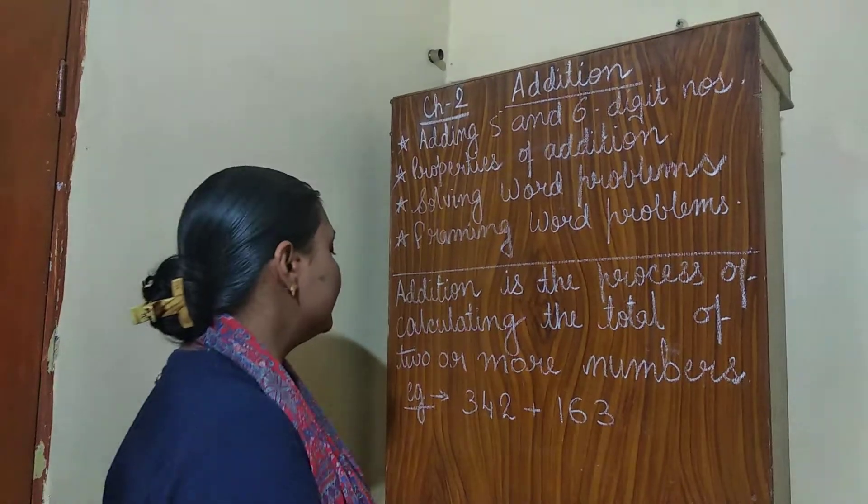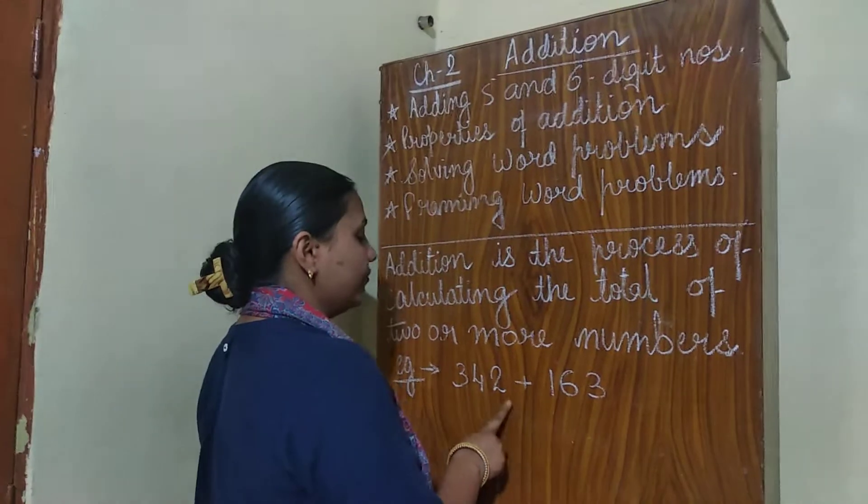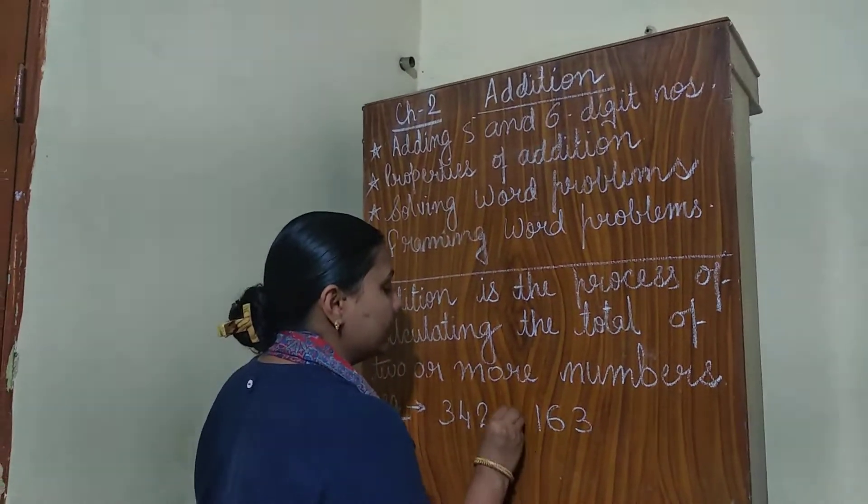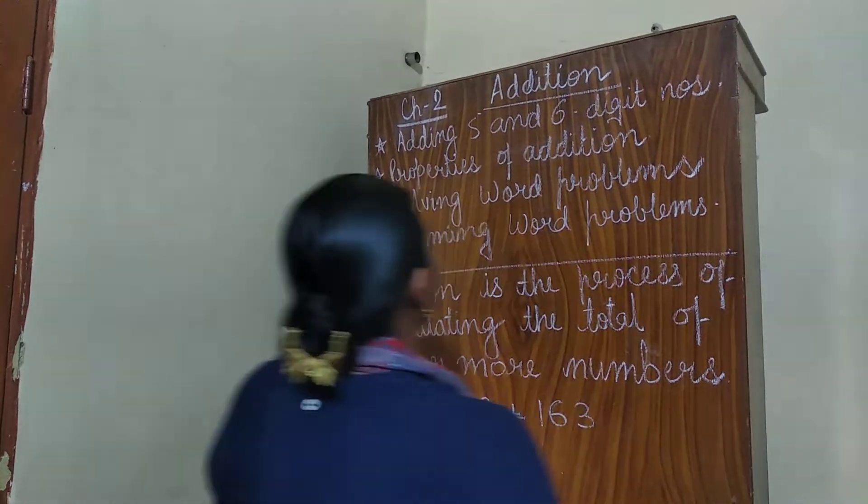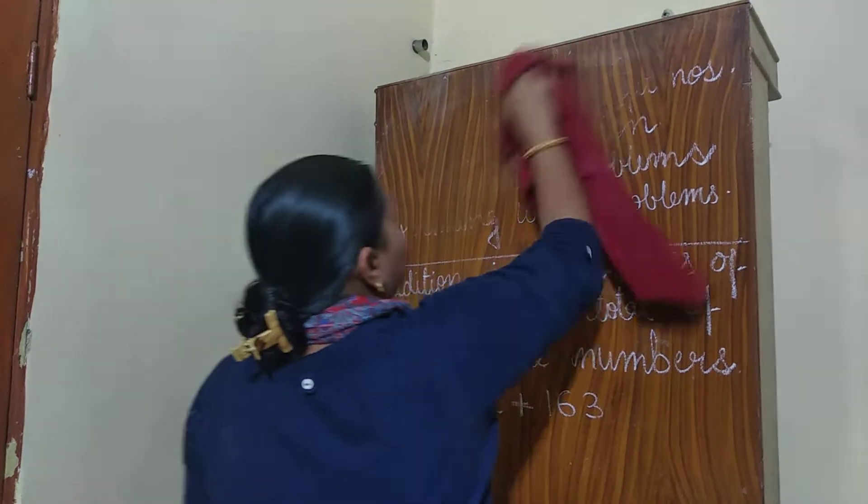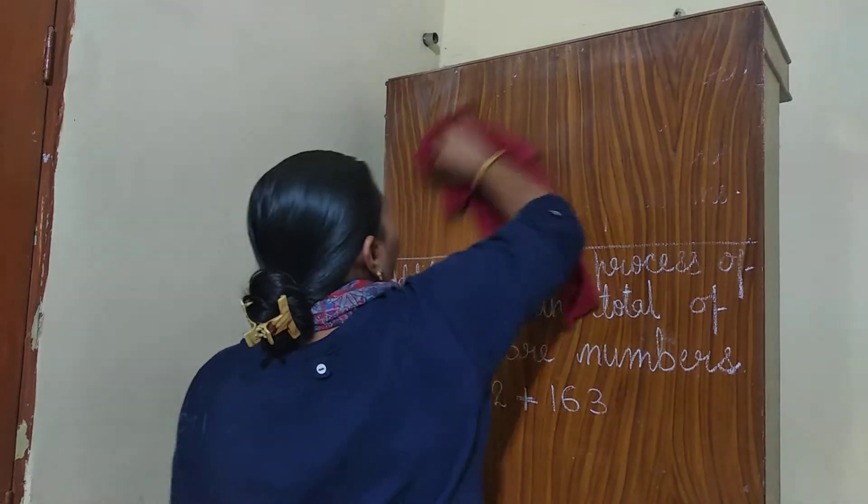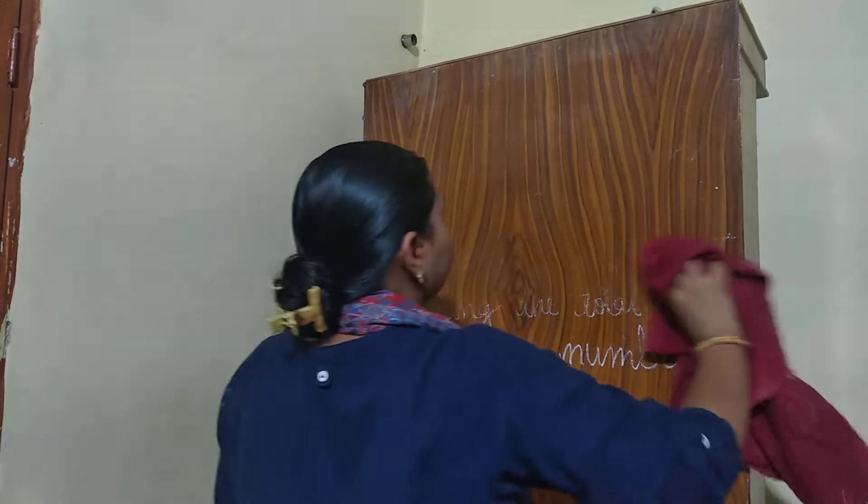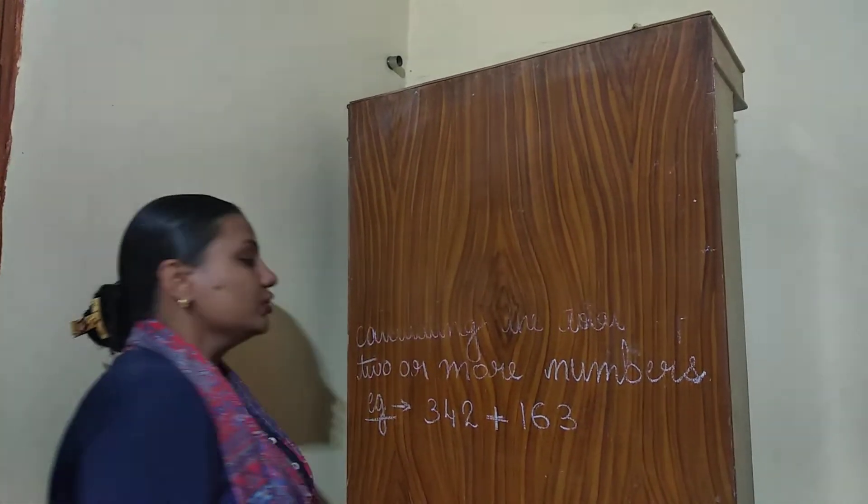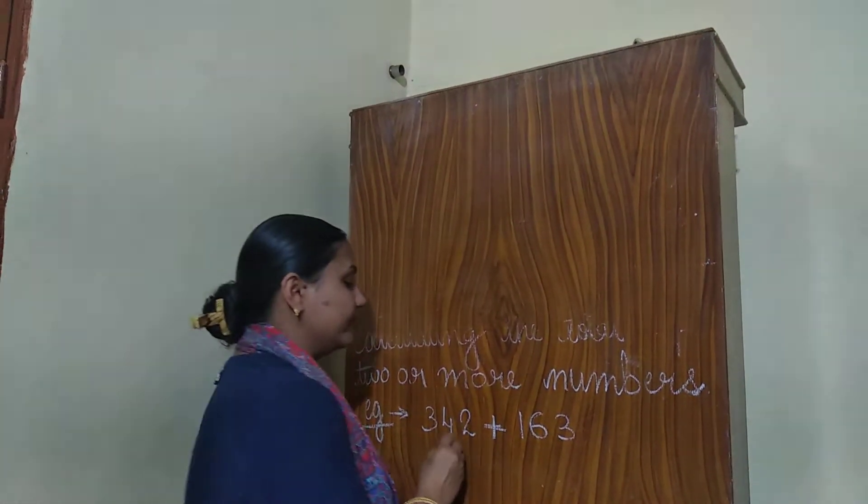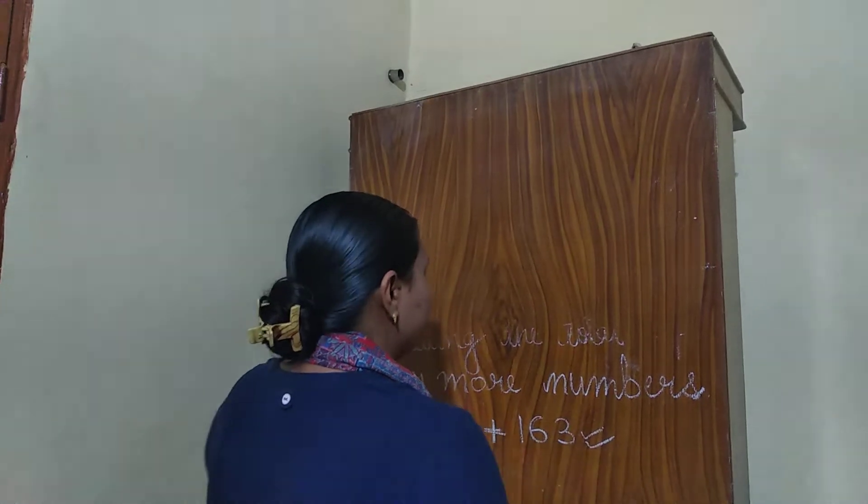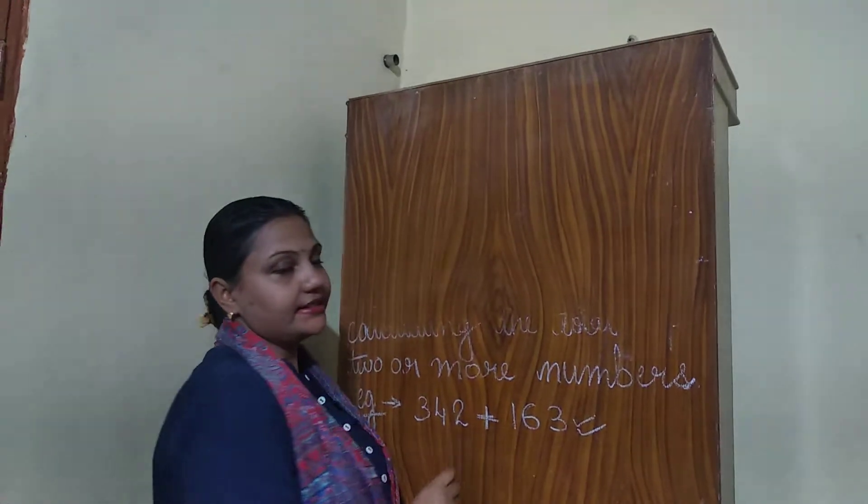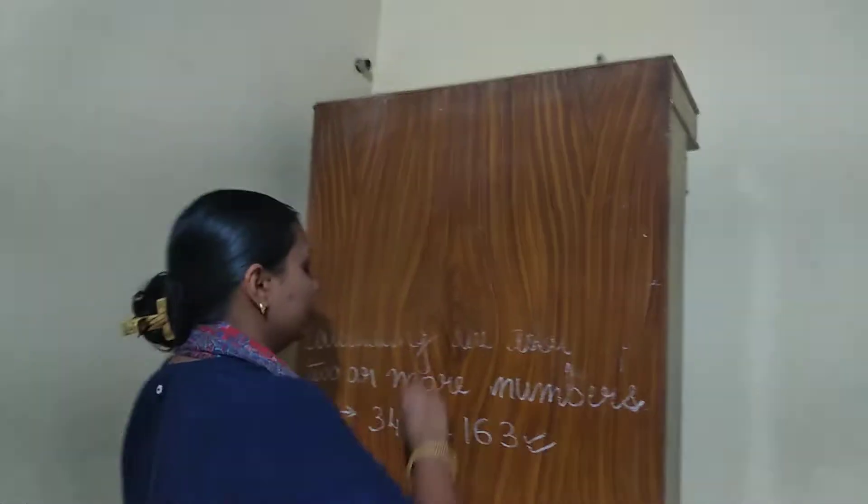Here I will take one example, 342 plus 163. Now this is the sign of addition. Now children, what is the first point that we need to remember that we have to arrange this 342 and 163 in correct order. What is the correct order?